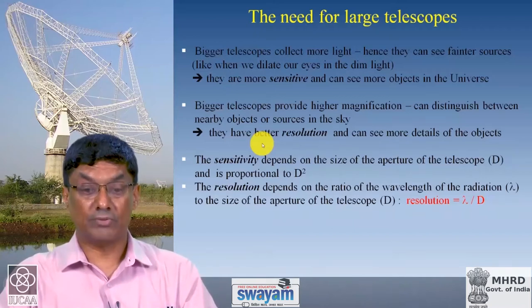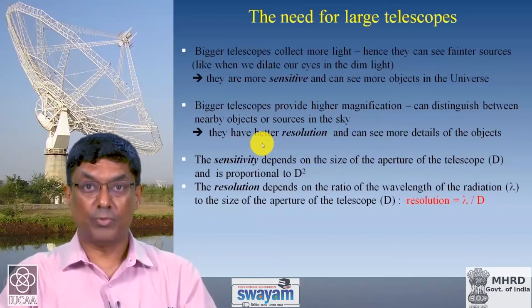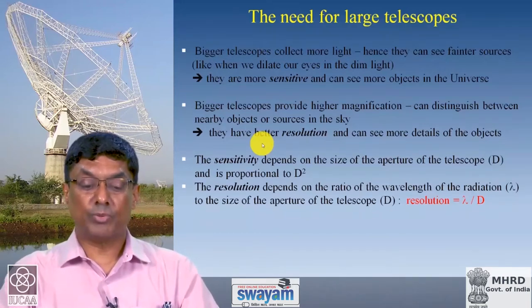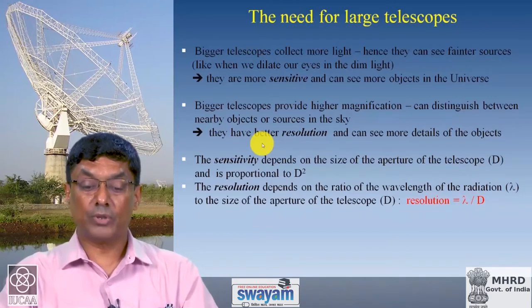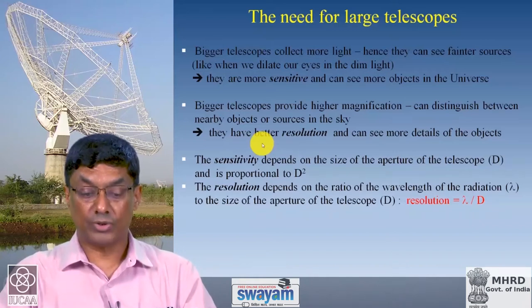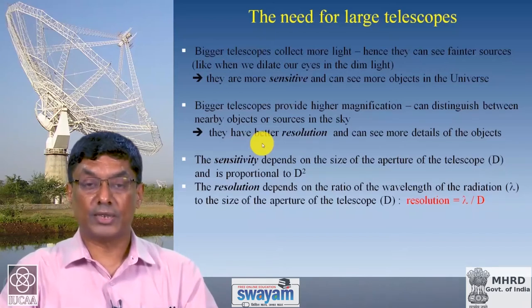This is analogous to why our eyes dilate in a dark room — to open the pupil wider and collect more signal in dim light conditions. In addition to better sensitivity, a bigger telescope provides what we call magnification, which means higher resolution: you can distinguish between nearby objects or sources in the sky much better.